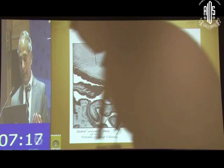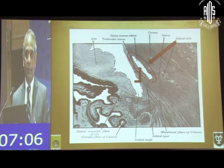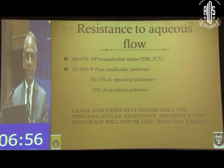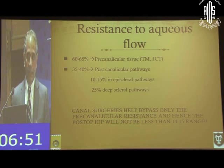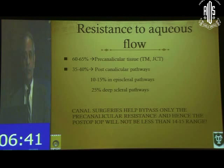If you need to divert the aqueous and bypass the juxtacanalicular complex, you can either use an ab-interno approach — from within the eye, within the angle structures — or approach the canal ab-externo by cutting into the sclera. Remember: the resistance to aqueous outflow is 60–70% from the pre-canalicular tissue, the trabecular meshwork, and the juxtacanalicular pathway, and approximately 35–40% from the post-canalicular pathways.